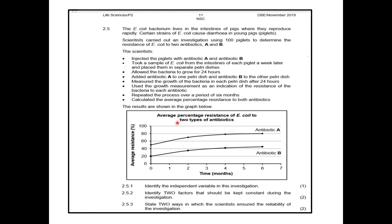The heading for the graph is 'average percentage resistance of E. coli to two types of antibiotics.' On your y-axis, that's your dependent variable, which is measuring average resistance in percentage. And on your x-axis, that's where you have time in months.